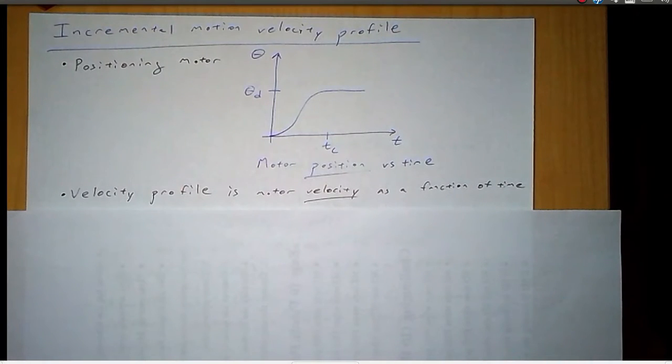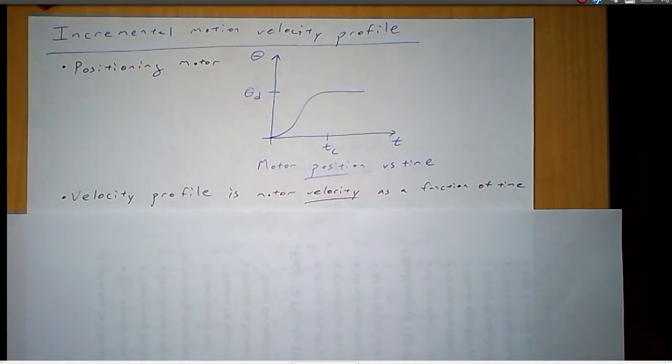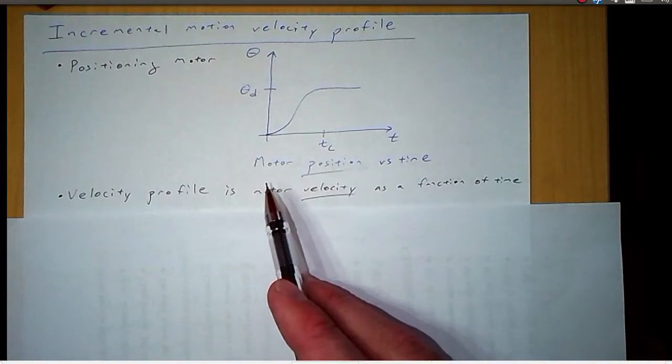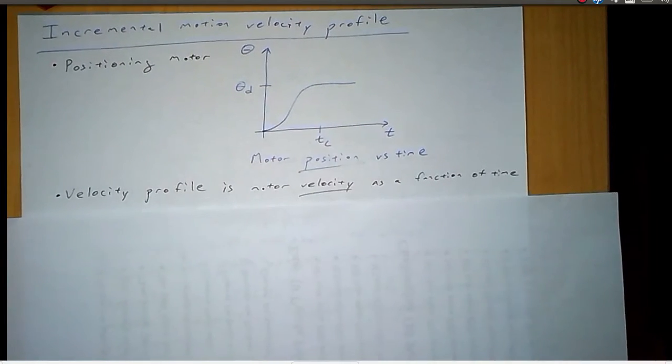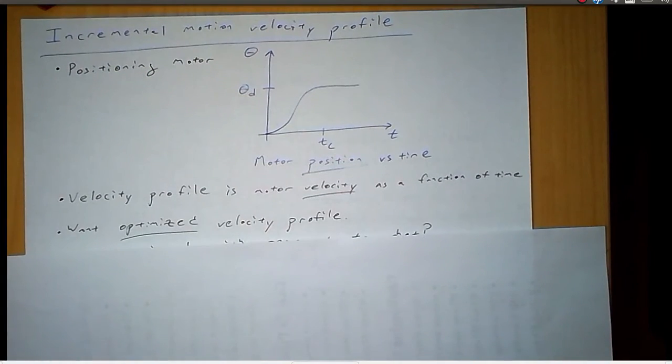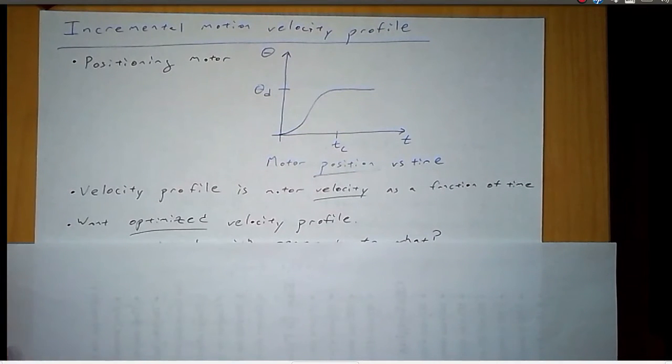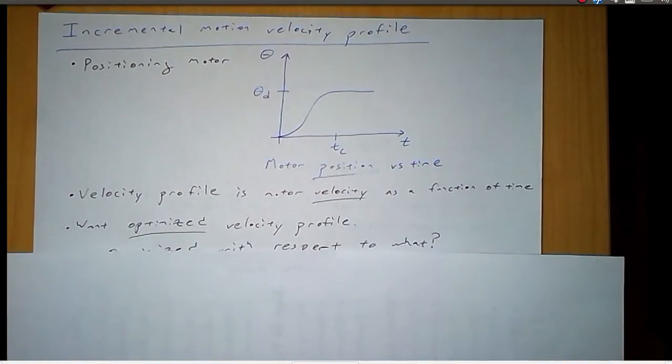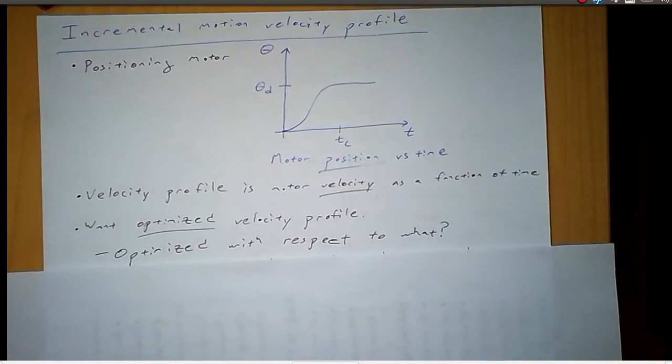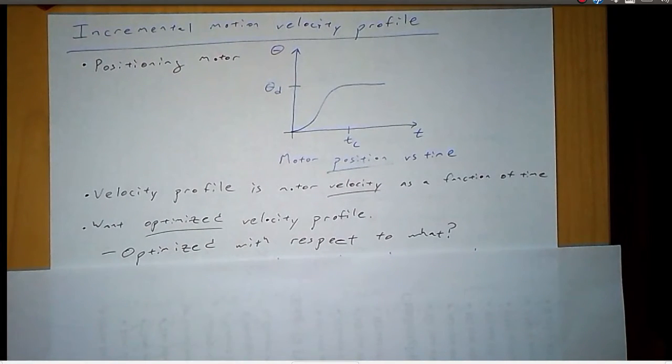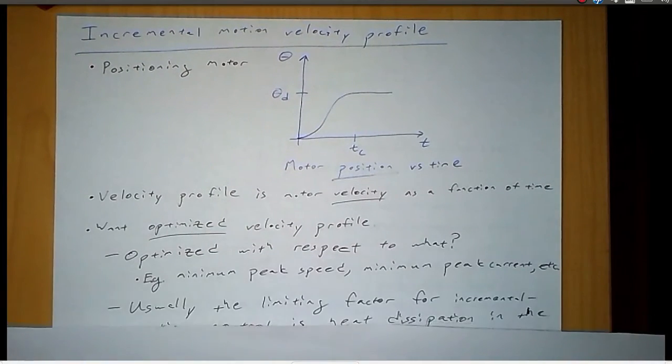Now, we know that much about it, but in between is left open, so what the velocity does in between time zero and time tc. And so we want to optimize the velocity profile. But whenever we talk about things being optimized, we have to answer the question, optimize with respect to what?